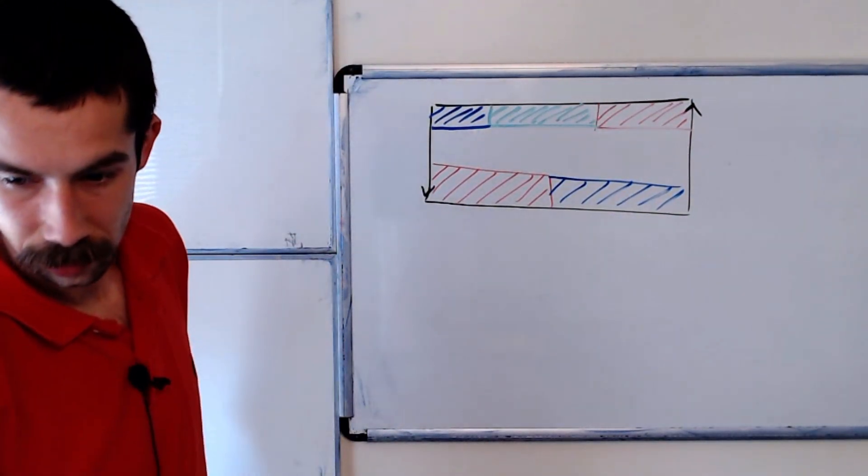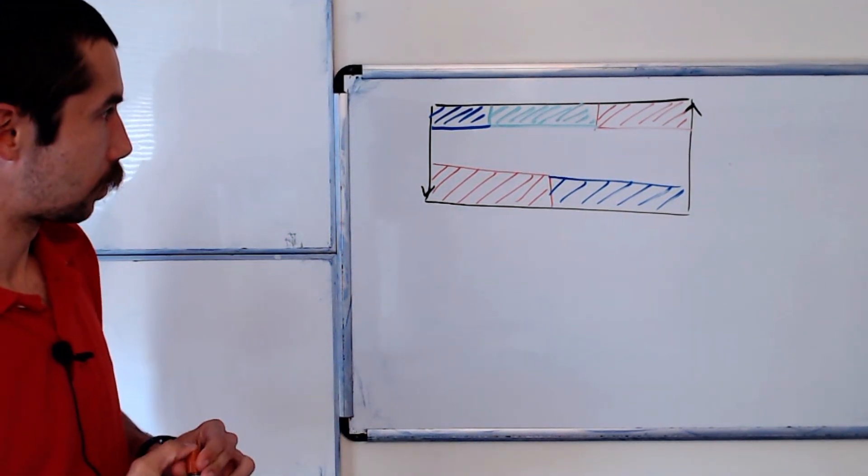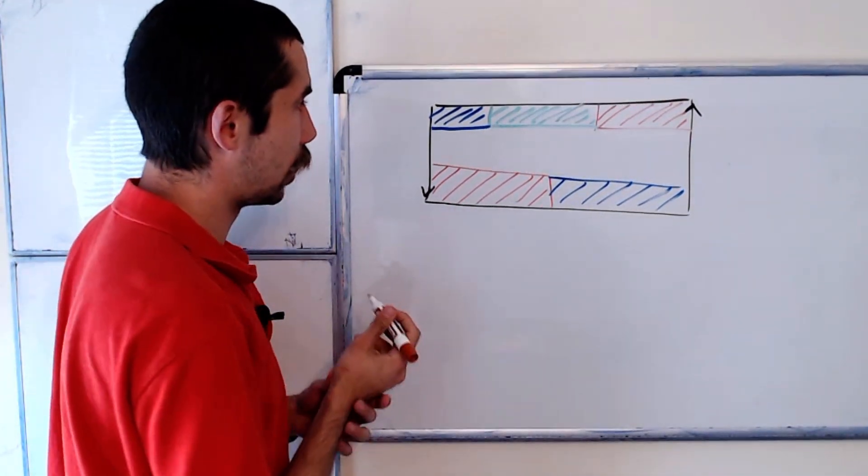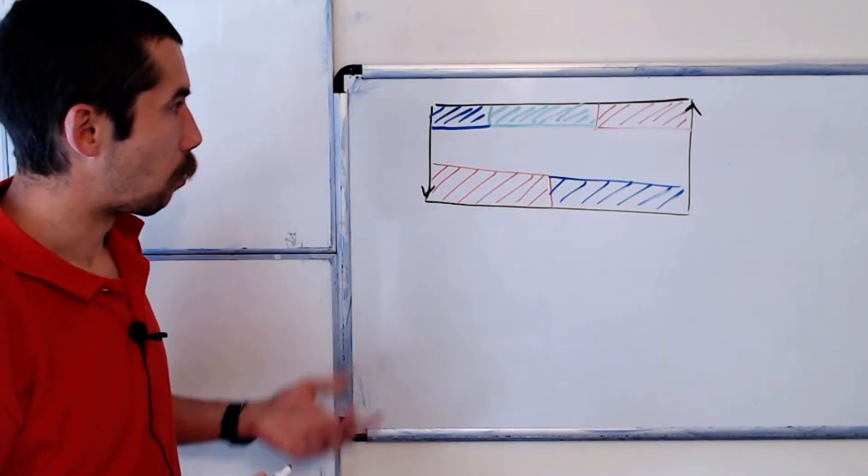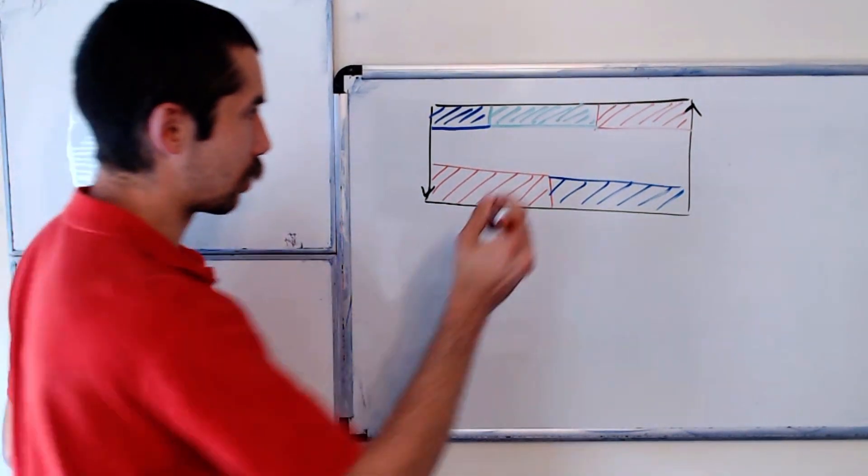Continuing along, we do a brown region. Well, the brown region, we want it to hit all three colors. So maybe it's here.